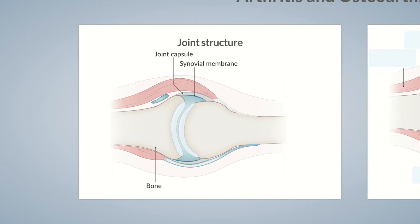The synovial membrane produces synovial fluid, or joint fluid, which is secreted into the joint cavity. In addition, the synovial membrane is responsible for the resorption of synovial fluid. The bone is covered with cartilage, which helps to reduce pressure between bones.